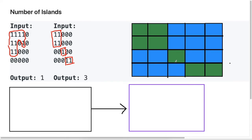When we see a problem like this, we know we need to traverse through each of the cells to figure out where the ones are. The first thing I'm going to do is have a variable called islands which collects how many islands there are. We initialize this with zero, and then we iterate over all the rows and all the columns to visit each and every cell — this can be done with a nested for loop.